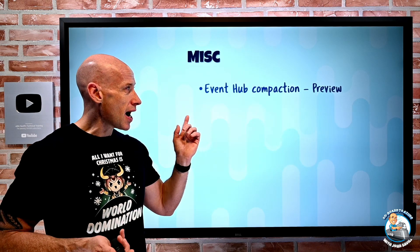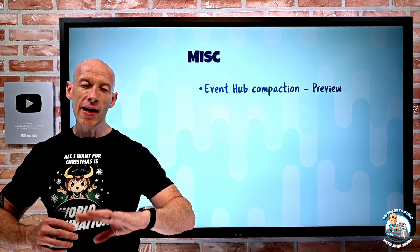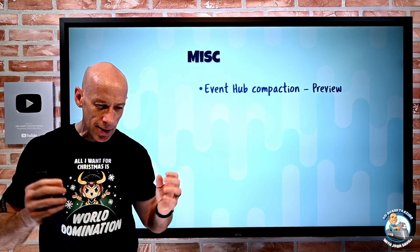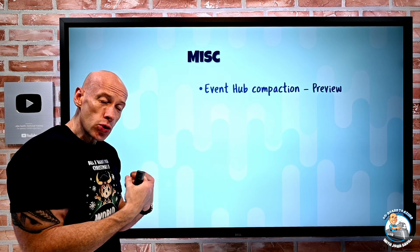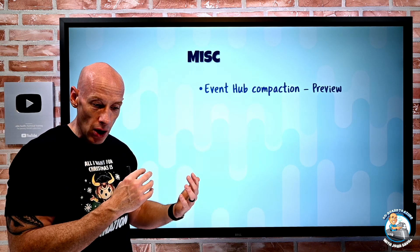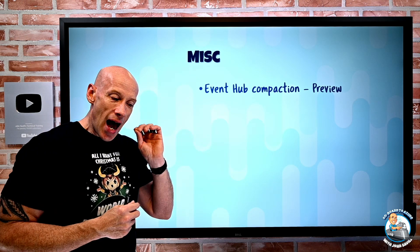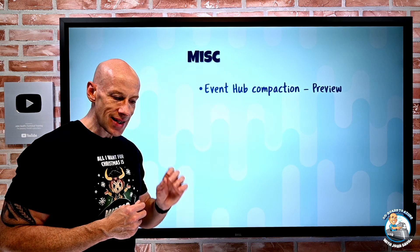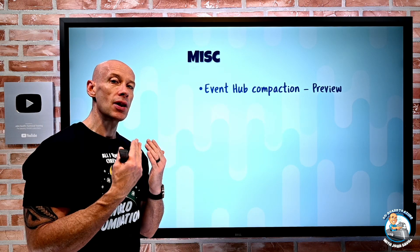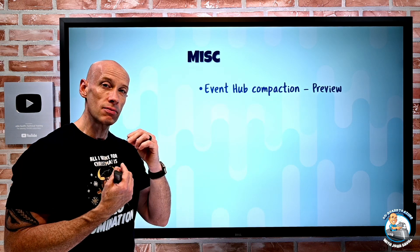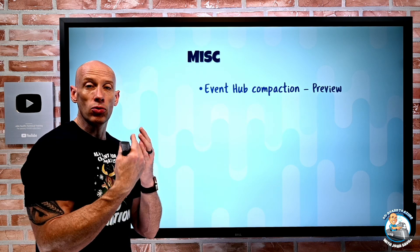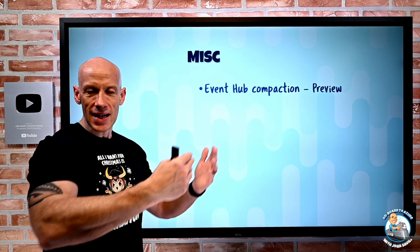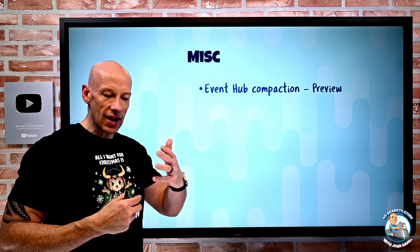In miscellaneous updates, Event Hub now has a compaction capability in preview. Ordinarily with Event Hub you have a massive event ingestion service where events are purged after a certain period of time. With compaction, instead of purging based on time, it keeps the last known value of each unique key. This is useful if you have constant updating of a set of keys — you just keep the most recent value for each one.